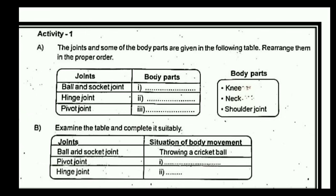Let's talk about the last chapter. The joints and some of the body parts are given. We will rearrange them in the proper order. Now, let's talk about the joints. There are three joints: the ball and socket joint, hinge joint, and pivot joint.